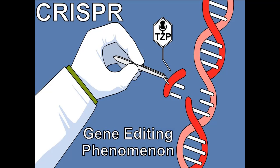However, rice is a staple for much of the world, making it an ideal produce for genetic manipulation. Scientists have jumped with both feet first into using CRISPR to improve rice in a variety of ways.